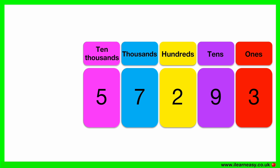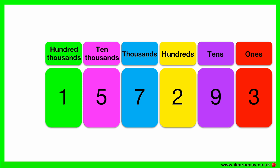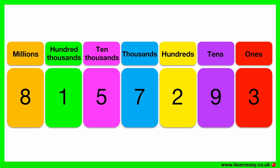Place values also include ten thousands, hundred thousands, and millions. So we can read this number as 8,157,293. Understanding the place values will help you to read and identify numbers correctly.